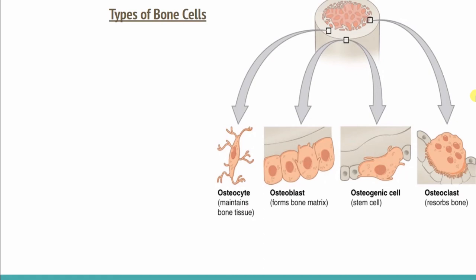We have basically four types of cells in any bone. First, we have osteogenic cells. This is a stem cell — a stem cell that needs to be developed. We have seen the bone starting with cartilage, then sponge bone and compact bone. So we have a stem cell that needs to be differentiated. This stem cell present in the bone is the osteogenic cell.